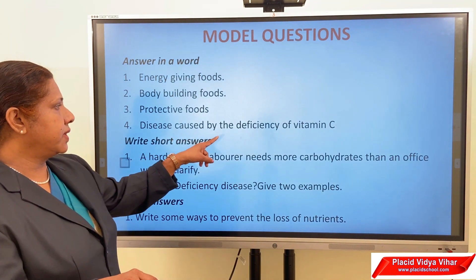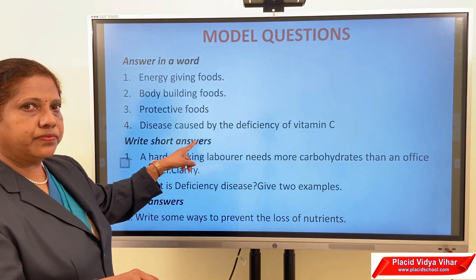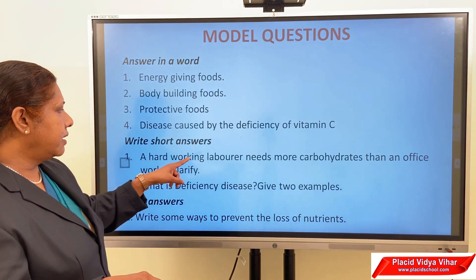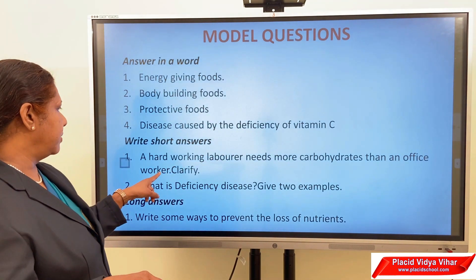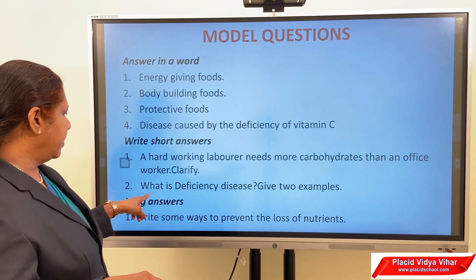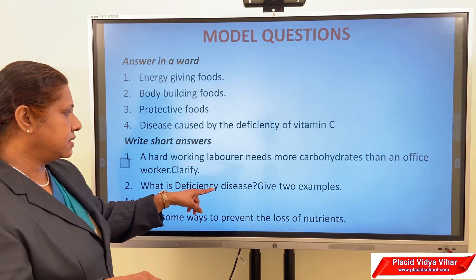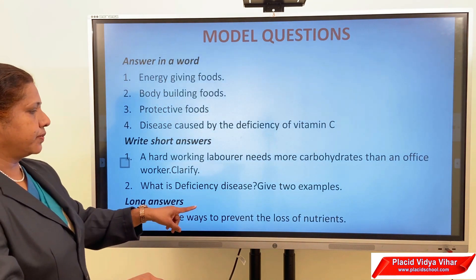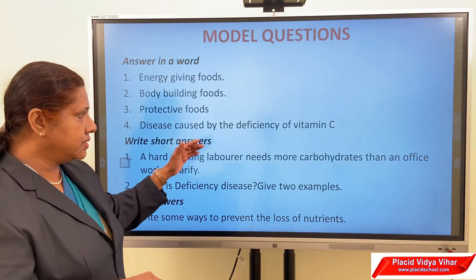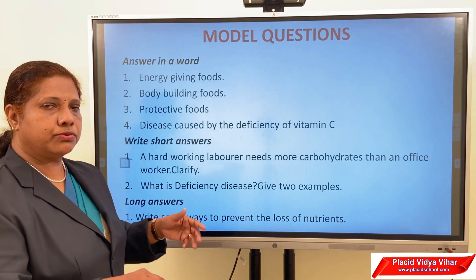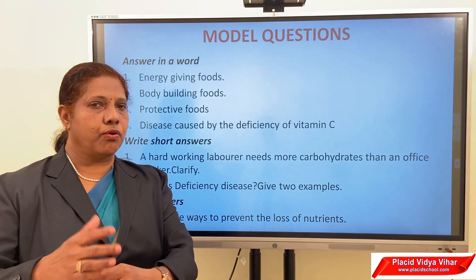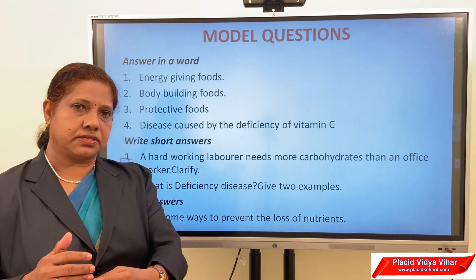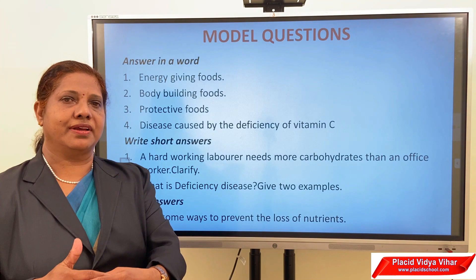Scurvy is caused by deficiency of vitamin C. Some model exam questions: a hard-working laborer needs more carbohydrates than an office worker — clarify; what is a deficiency disease with two examples; and write some ways to prevent the loss of nutrients. Watch the video two or three times and study the answers. Any doubts can be discussed in the discussion session.